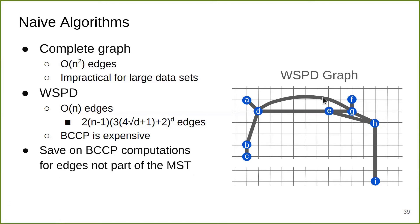The first thing we need to do is to save on BCCP computations for edges that are not part of the final MST. For example, for this WSPD graph, we see that there's a cycle, which means this edge shouldn't belong to the MST. So we may be able to save on a BCCP computation.